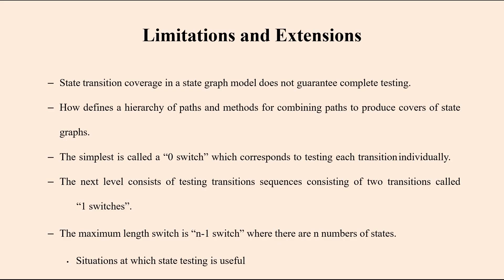The simplest level is called a zero switch, which corresponds to testing each transition individually. The next level is the one switch, where testing transition sequences consist of two transitions. The maximum length is the n minus one switch, where n is the number of states. For example, with five states, you have four switches.